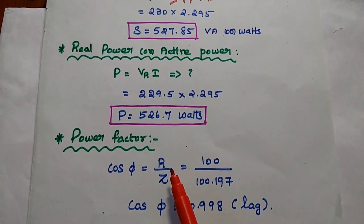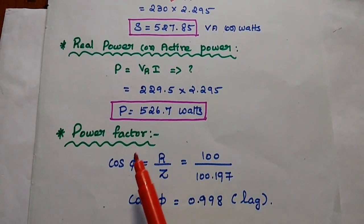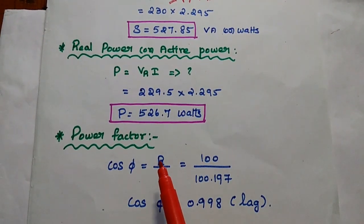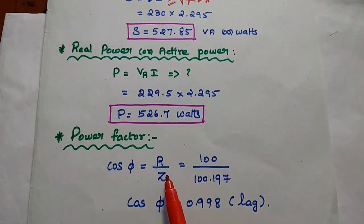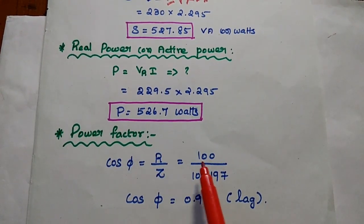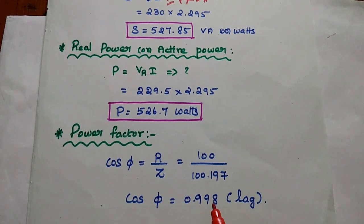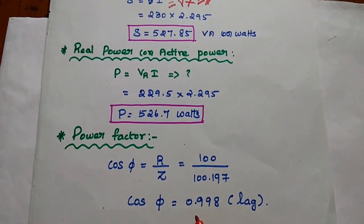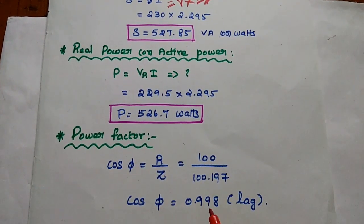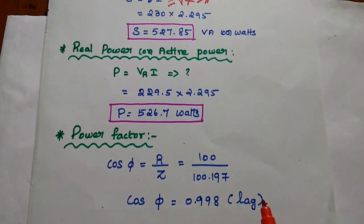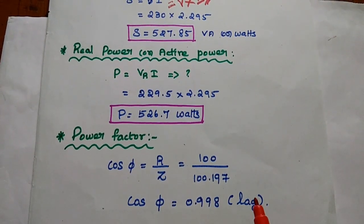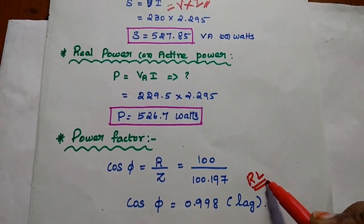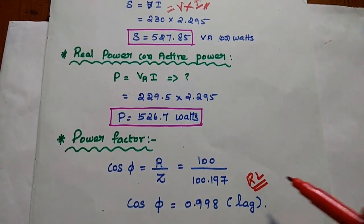Finally, we are going to find out the power factor. cos φ is equal to resistance divided by impedance. Resistance value is 100 and impedance value is 100.197. We get cos φ as 0.998, which is lagging, because in an RL circuit the current is lagging with respect to voltage.